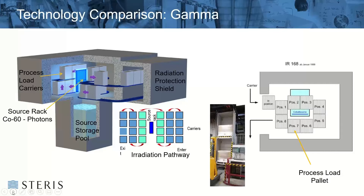We're going to start off with gamma. In general, what you see in this graphic is where all the carriers would be, how they would move around the source — that little blue box. When the source is not being used, it's stored under the floor level of the radiator in a big pool of water. That's because you can't turn off a gamma radiator. The radioactive material will continue to decay as soon as it's made. Storing it under the floor in the enclosed protected area in the water allows people to go in and out of the irradiator safely.